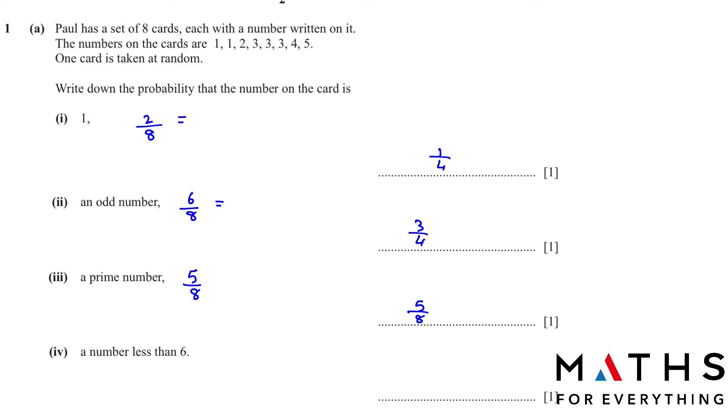Now we want a number less than 6. All the numbers are less than 6. So there are 8 numbers that are less than 6 over 8, which is 1.